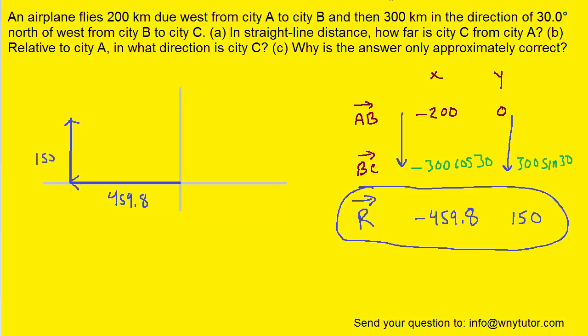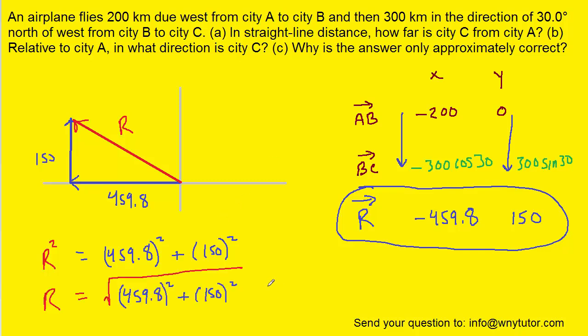The resultant, which is exactly what we're looking for, will simply be a line that projects from the origin to the tip of the last vector that we drew. To find the magnitude of that resultant, we can just use the Pythagorean theorem. The hypotenuse squared is equal to one side squared plus the other side squared. We would square root both sides to solve for r, and when we simplify that we get approximately 484 kilometers. That represents the answer to part a, the distance from city A all the way out to city C.